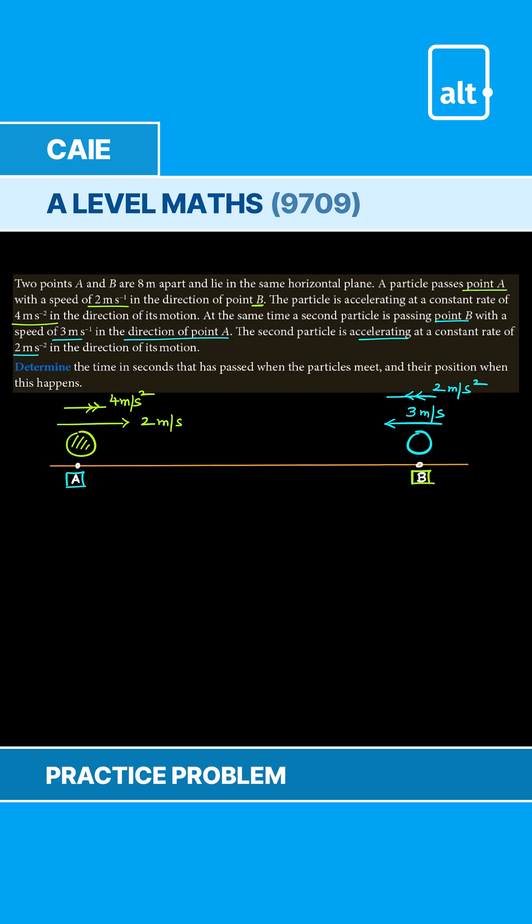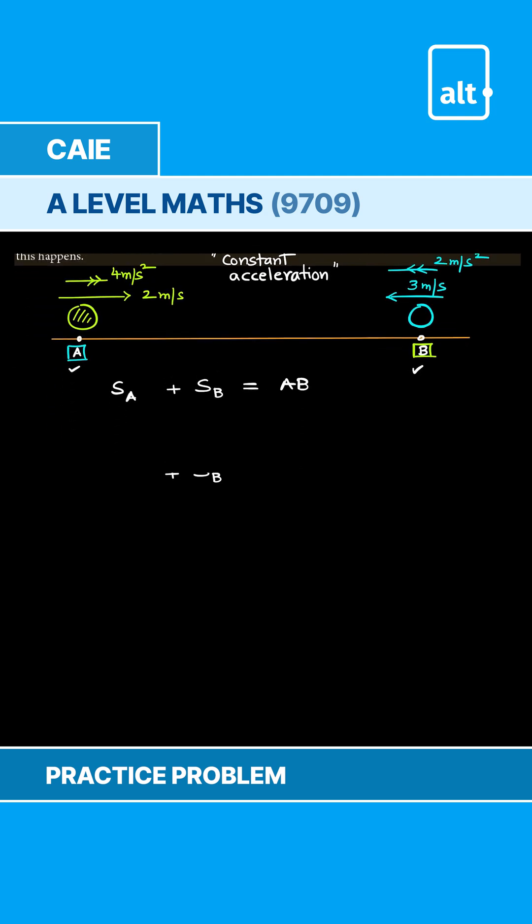Now keep in mind, when we talk about using equations of motion, we are always dealing with a constant acceleration scenario. So now we have this particle A, we have this particle B and they are 8 meters apart. That means distance covered by A plus distance covered by B should add up to the distance AB which is 8 meters. So let's get started with the working.